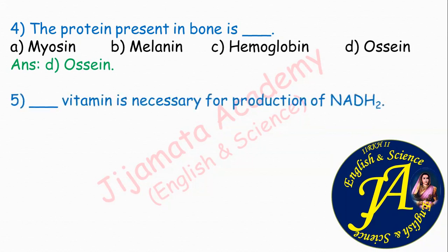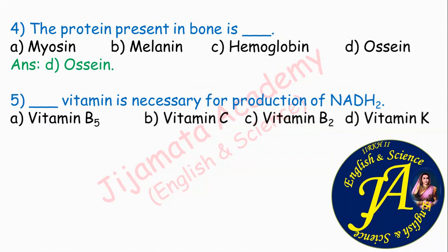Fifth question: dash vitamin is necessary for production of NADH2. Options are vitamin B5, vitamin C, vitamin B2, vitamin K. Correct answer is vitamin B5. Vitamin B5 is necessary for production of NADH2, and vitamin B2 is necessary for production of FADH2.